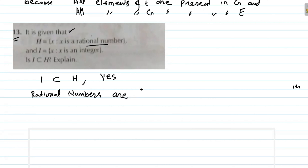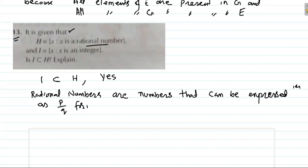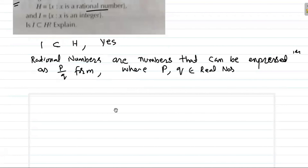Question 13: H = {x | x is a rational number}, I = {x | x is an integer}. Is I a subset of H? Yes, I is a subset of H. The reason is that rational numbers consist of numbers that can be expressed in P/Q form.